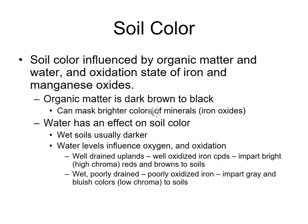Water also affects soil color — wetter soils are usually darker. More moisture can influence oxygen levels and the degree of oxidation. Well-drained soils have well-oxidized iron, which imparts a bright red or brown color. Poorly drained soils have poorly oxidized iron, giving a gray or bluish color. Oxidized iron is like rust — reddish from exposure to oxygen — so less moist soils tend toward reddish colors.